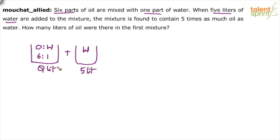When this is added, the mixture is found to contain five times as much oil as water. So upon adding water, we get the new mixture. Let's say this is O' and W'. Here it is found that oil is five times the water. That means the ratio is 5 is to 1. What is the quantity? Q plus 5.